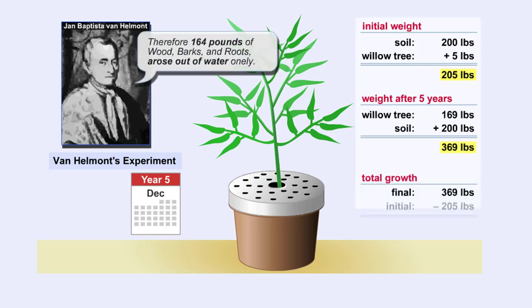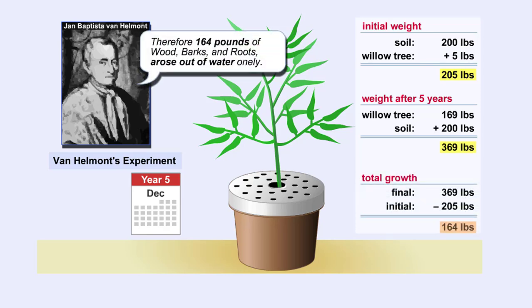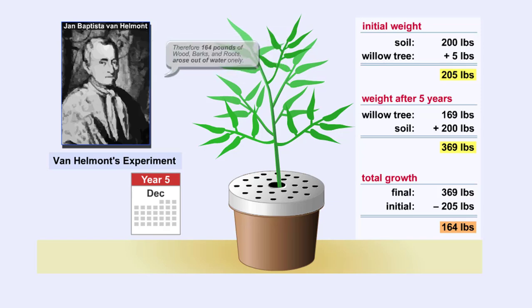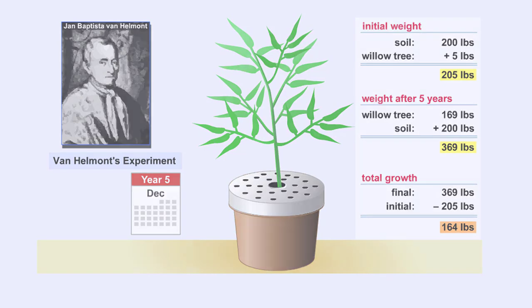"Therefore, 164 pounds of wood, barks, and roots arose out of water only." Of course, van Helmont's conclusion was wrong, because he was unaware of the exact composition of air, and that the weight gain had actually occurred because the plant had used the carbon dioxide in the atmosphere to form sugars, or tree matter.